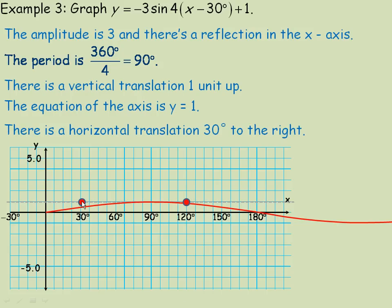Halfway between 30 and 120 is the middle of the cycle. The sine function is upside down due to the reflection, so instead of going up, it traces down first. The amplitude is 3, so halfway between 30 and the middle, we place a dot 3 units below the y equals 1 line.